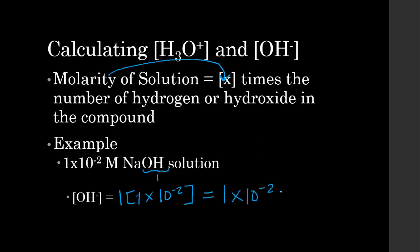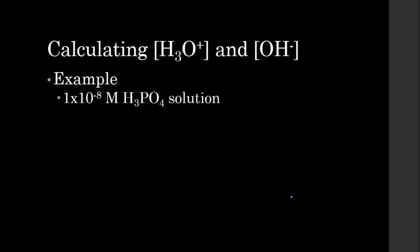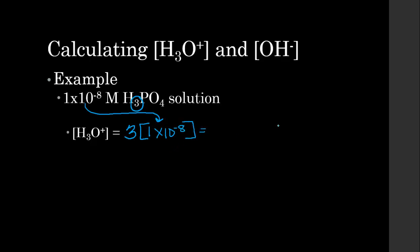For a 1×10⁻⁸ molar H₃PO₄ solution, we're making an acidic solution. H₃PO₄ has 3 hydrogens, so through ionization we produce the hydronium ion 3 different times. We take 3 times the molarity: 3 times 1×10⁻⁸ gives us a hydronium ion concentration of 3×10⁻⁸ molar.